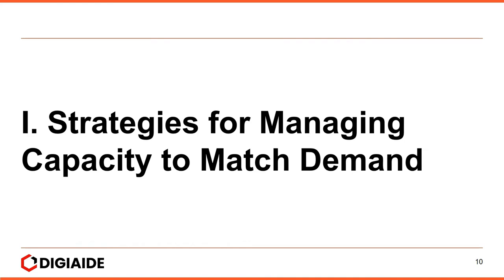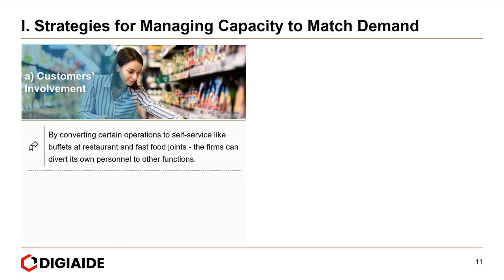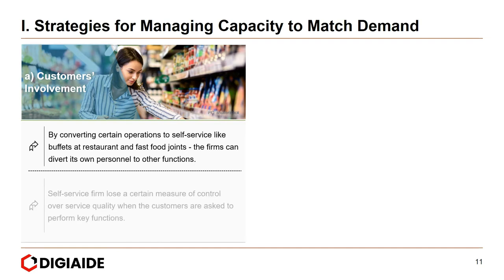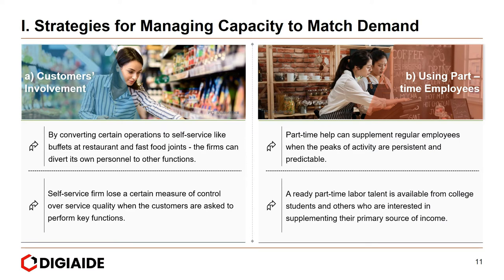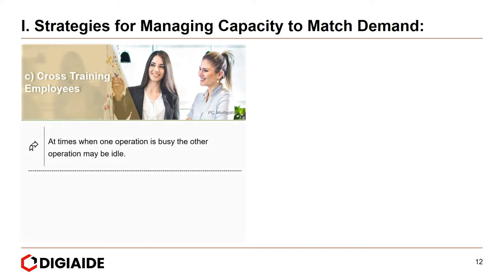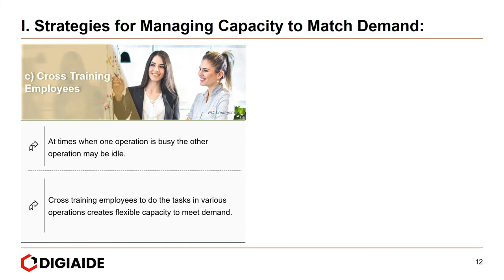Let's look at strategies for managing capacity to match demand — in short, managing supply. First, customer involvement: by converting certain operations to self-service, like buffets in restaurants and fast food joints, firms can divert their own personnel to other functions, though they lose some control over service quality. Next, using part-time employees: part-timers can supplement regular employees when peak activity is persistent and predictable, drawn from college students or those seeking summer or internship jobs. Third, cross-training employees: when one operation is busy and another is idle, cross-training employees to handle various operations creates flexible capacity to meet demand.